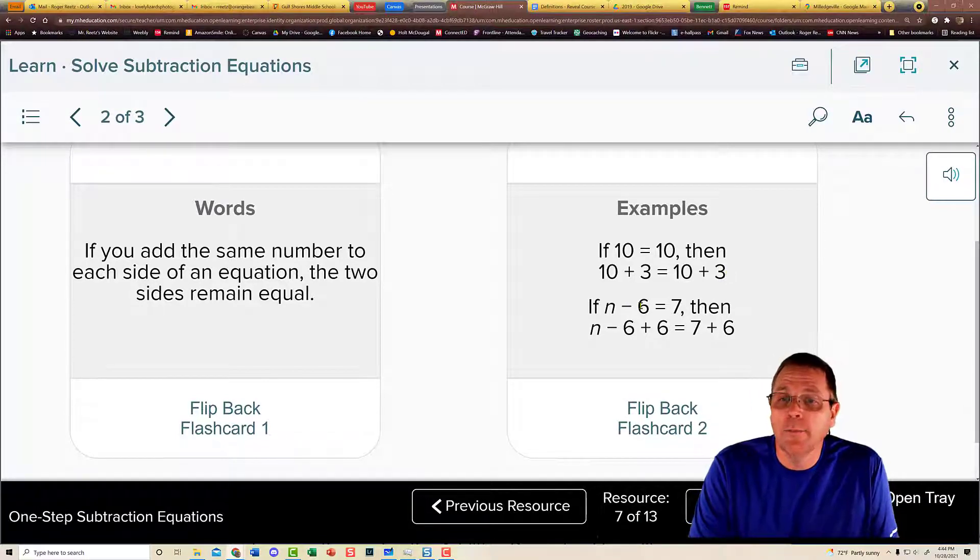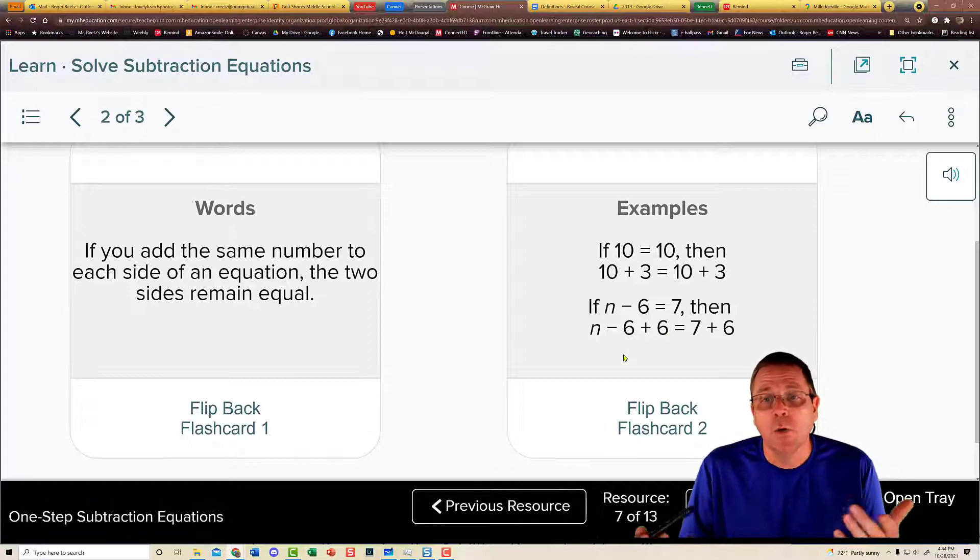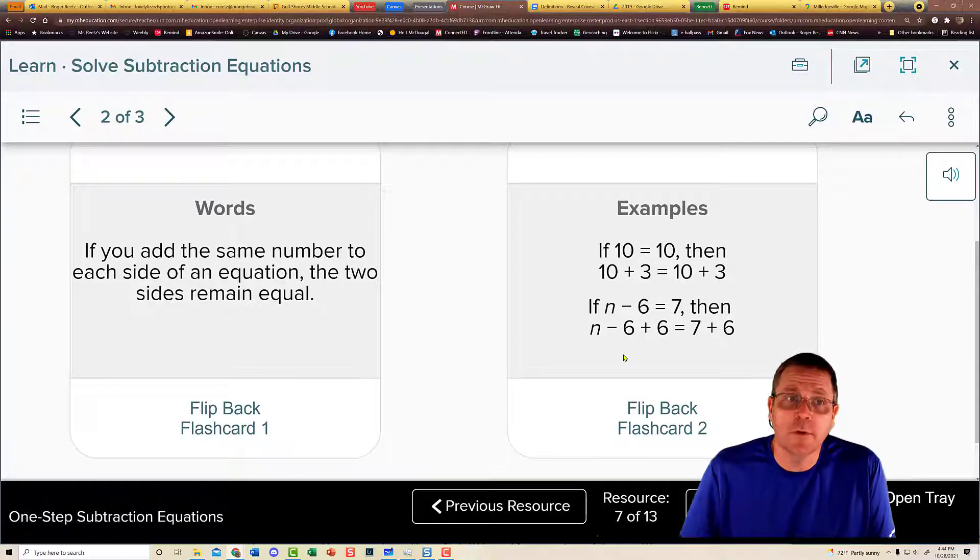If you had n minus 6 is equal to 7, and you added 6 to both sides, well, then those 6s would zero out and you'd get n is equal to 13. Once again, both sides would still be equal.